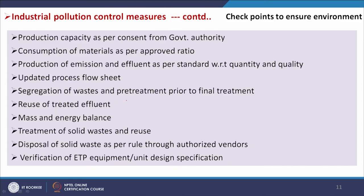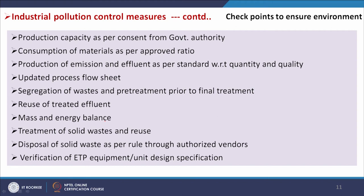Segregation of waste and pretreatment prior to final treatment is important. Different waste streams have different compositions, and if mixed centrally the treatment becomes difficult, whereas removing specific components from respective streams makes the process more effective. Reuse of treated effluent through recycling is increasingly implemented in industries. Mass and energy balance is also a key checkpoint to ensure the process is under control.